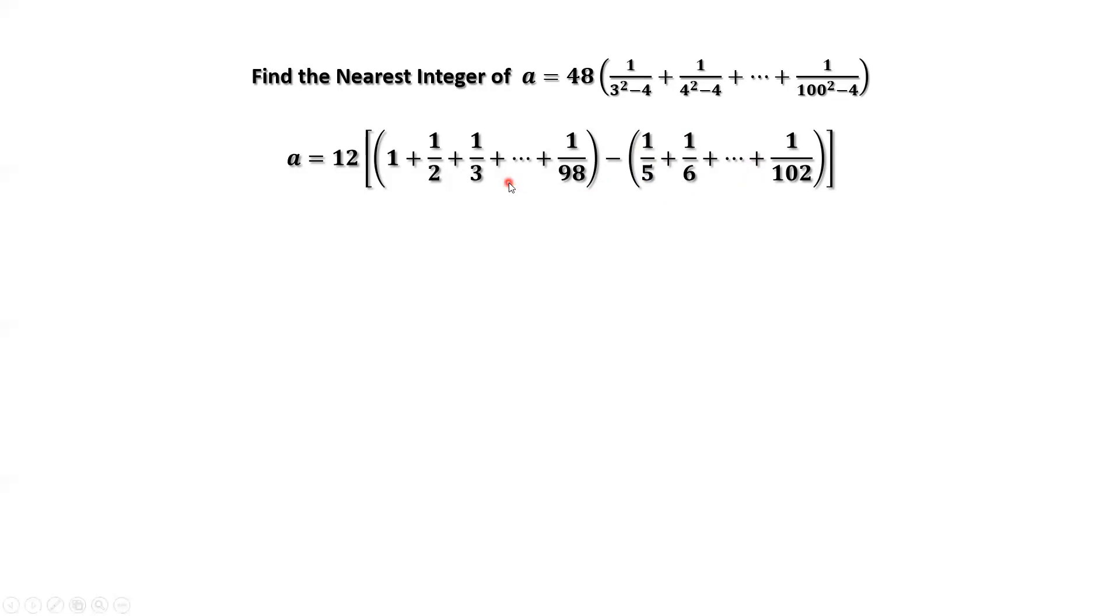The remaining part from the first parenthesis are 1, 1 half, 1 third, 1 fourth, and the remaining part from the second parenthesis are 1 over 99, 100, 101, 102.